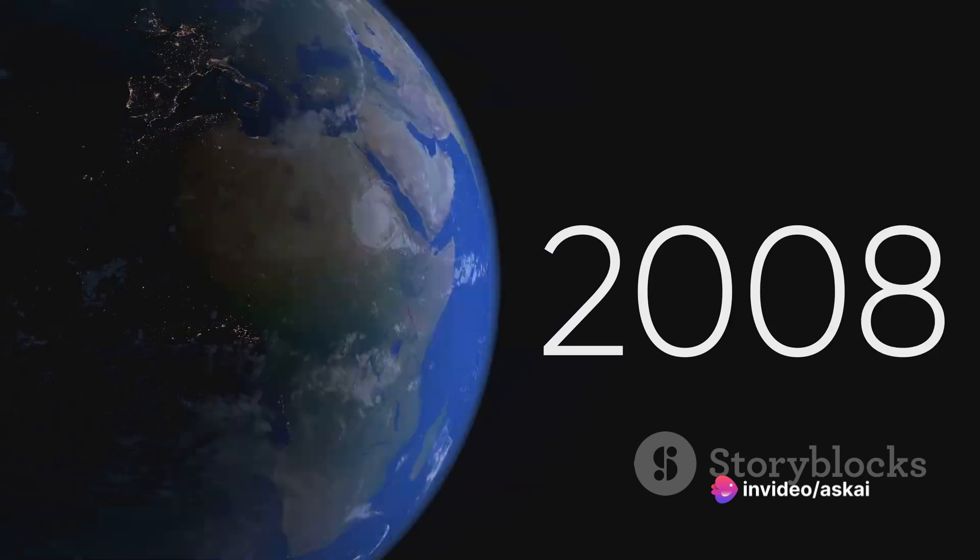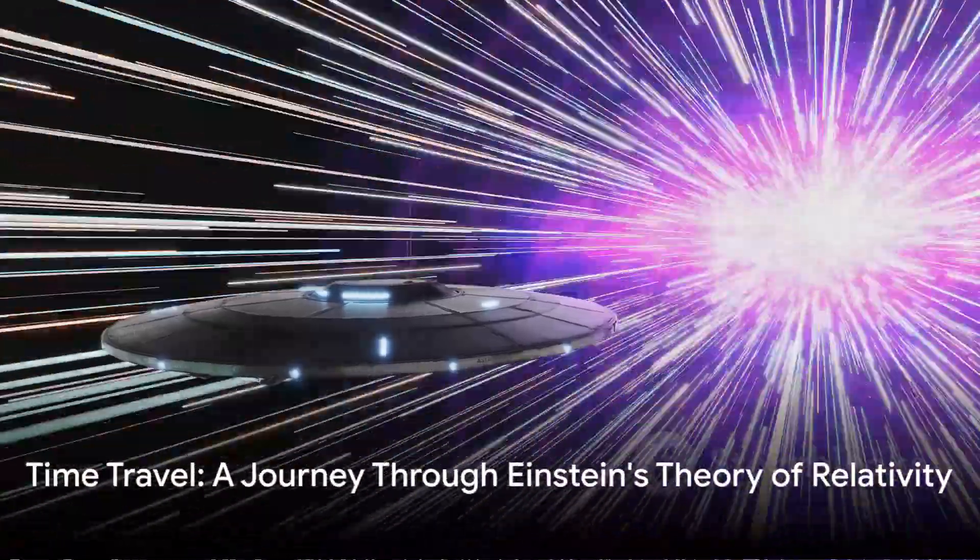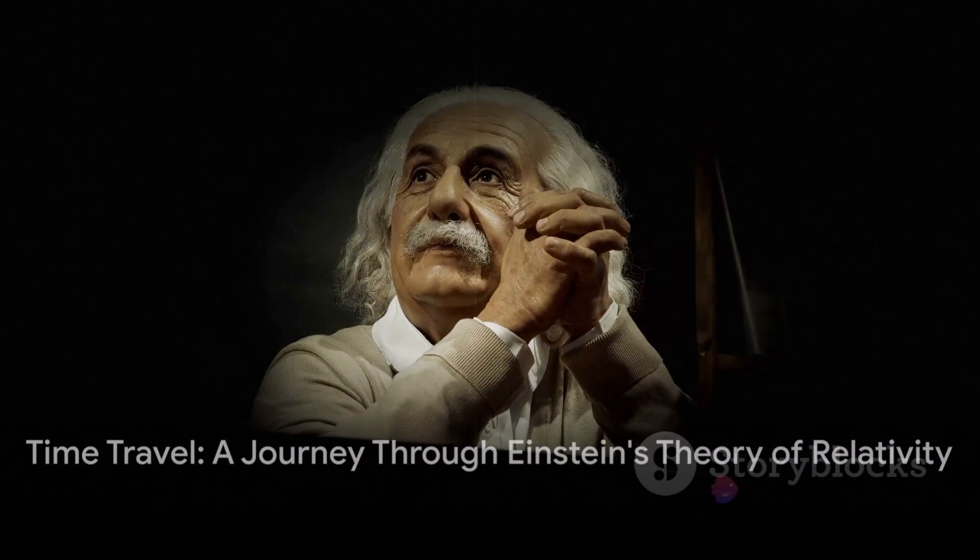According to Einstein, time isn't a fixed entity. It's relative and can be influenced by factors such as gravity and velocity. Quite a mind-bending concept, isn't it? This means that time can pass at different rates for observers in different gravitational fields or moving at different speeds.